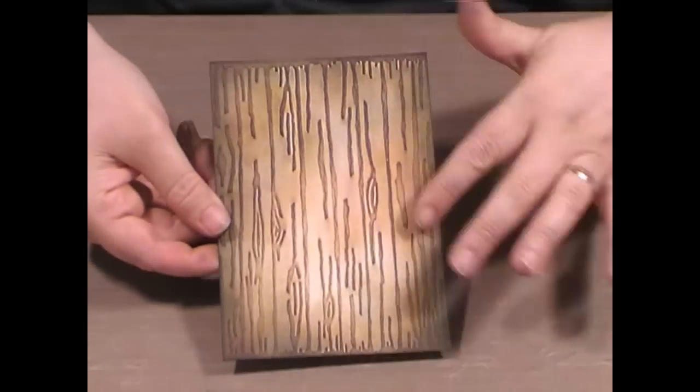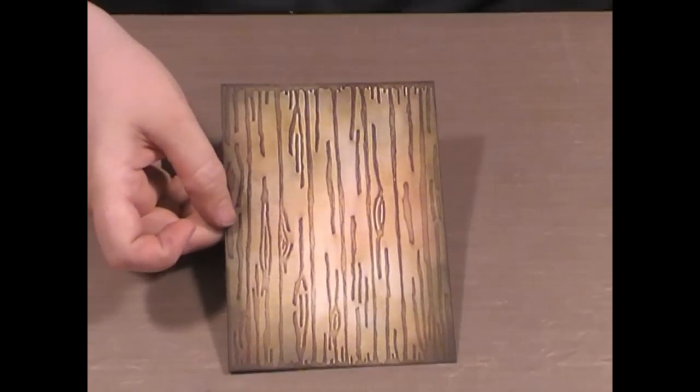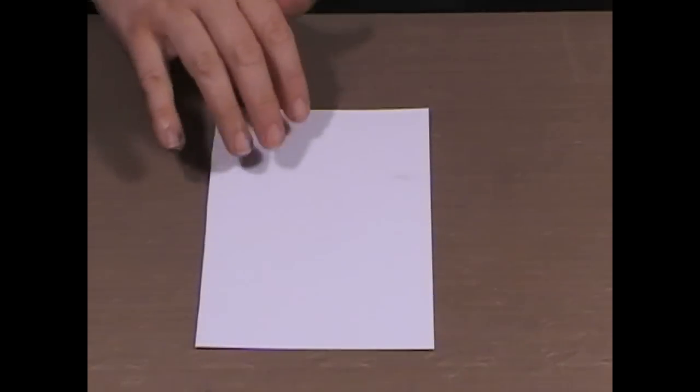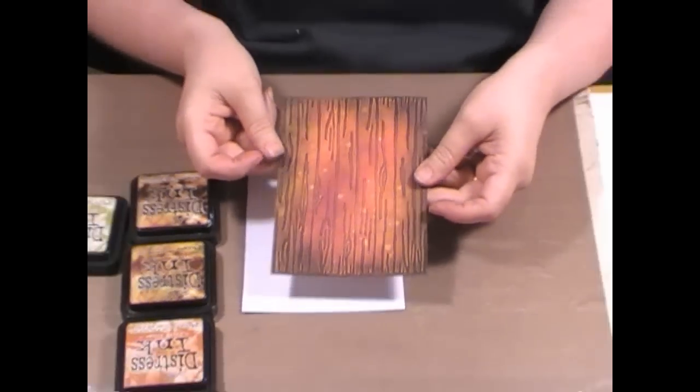If we want to create a really nice wood type background using the wood finish folder, I'm going to take some Centura Pearl card, the reverse side. To create the wood type background I've chosen some nice warm, woody kind of colors. We could add a little bit of red in that as well.